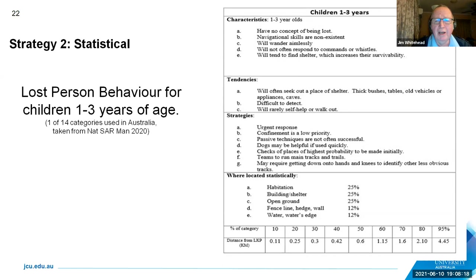Confinement is a low priority because kids don't often go that far. Passive techniques don't work, but dogs can be useful if deployed quickly enough. Making checks of the highest probability areas initially gives us a greater chance of finding them. Most kids one to three are found within a building of some sort, and sadly there is a small percentage found near water. The key statistic is that 80% of kids in this age group are found within two kilometres of where they were last seen. What I'm trying to do is something very similar to this, but with the disposal of homicide victims.